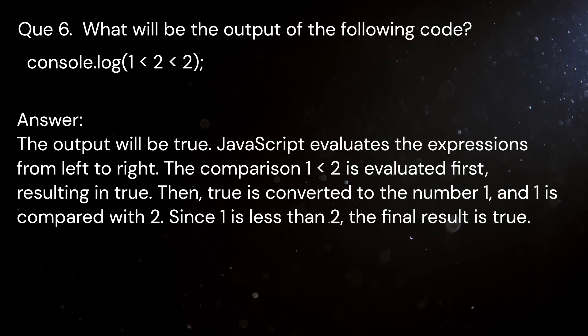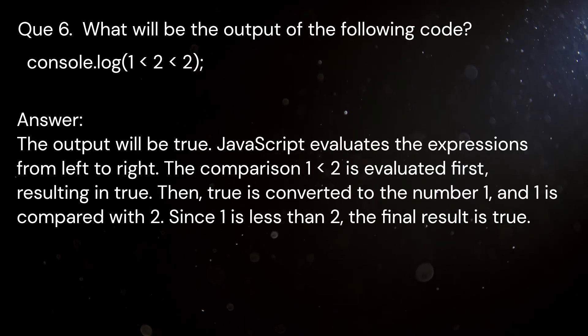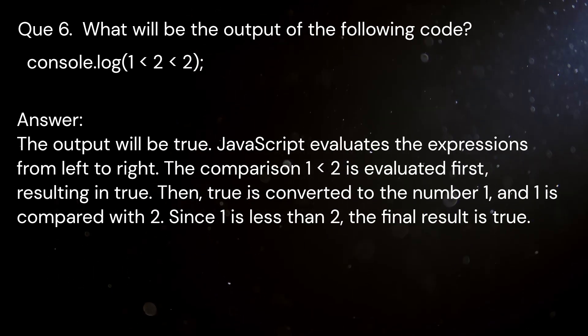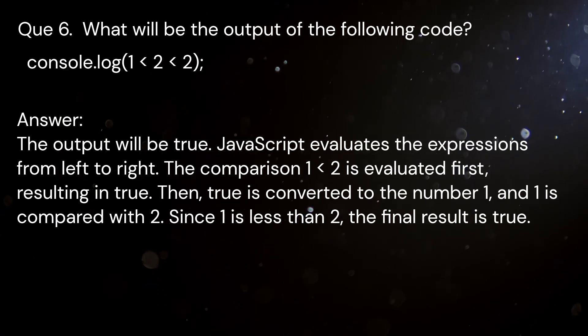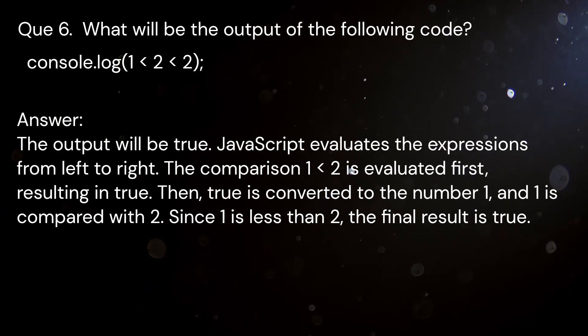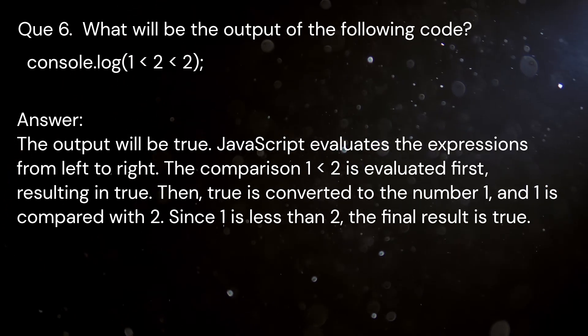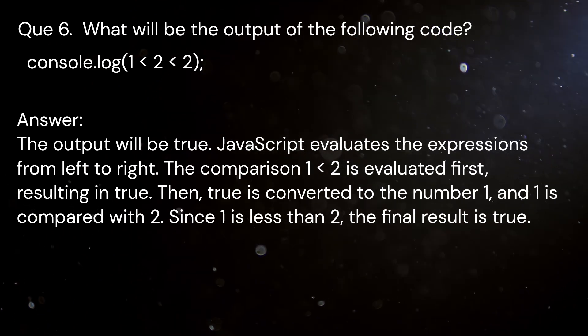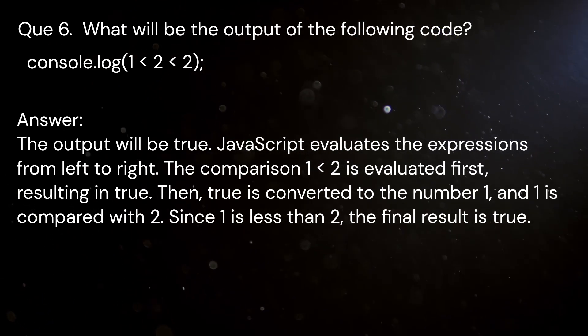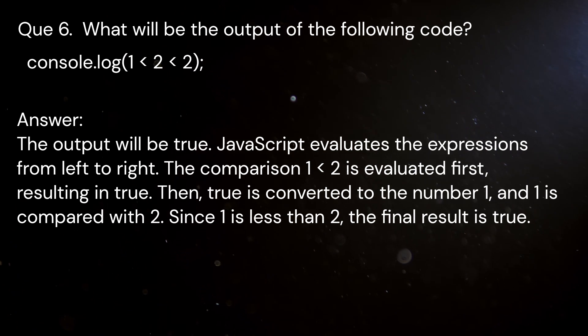Question 6: What will be the output of the following code? console.log(1 < 2 < 2). Answer: The output will be true. JavaScript evaluates the expressions from left to right. The comparison 1 < 2 is evaluated first, resulting in true. Then true is converted to the number 1, and 1 is compared with 2. Since 1 is less than 2, the final result is true.